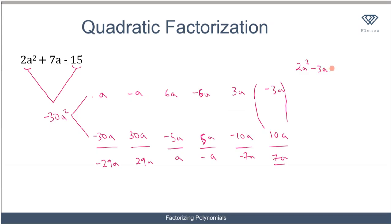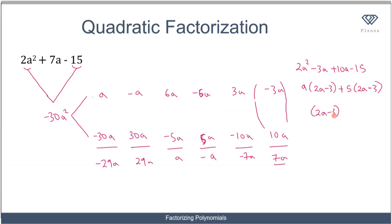I replace 7a with minus 3a and 10a, giving 2a squared minus 3a plus 10a minus 15a. What is common to the first two terms? a, leaving 2a minus 3. What is common to the last two terms? 5, leaving 2a minus 3. So the factorized result is (2a minus 3)(a + 5).